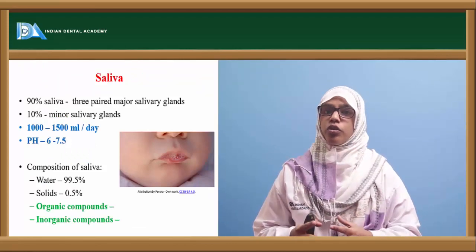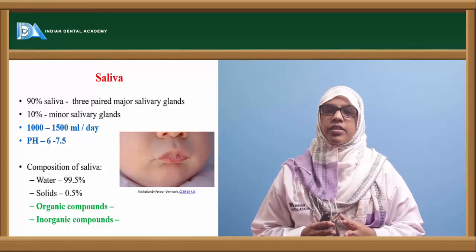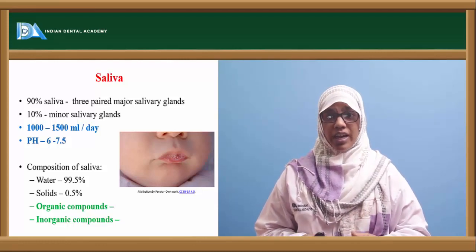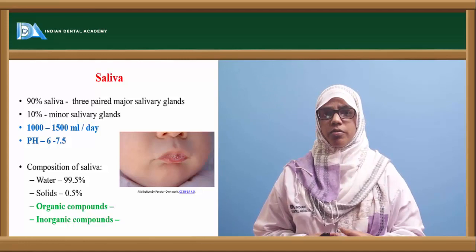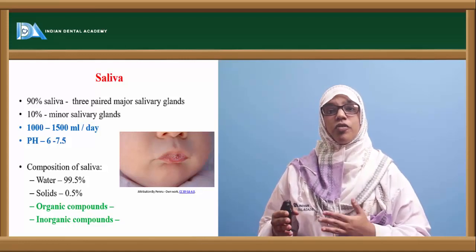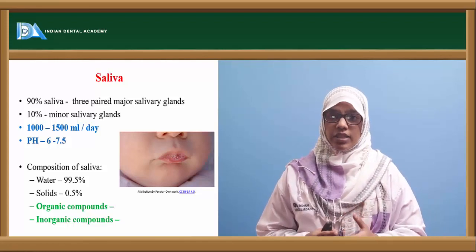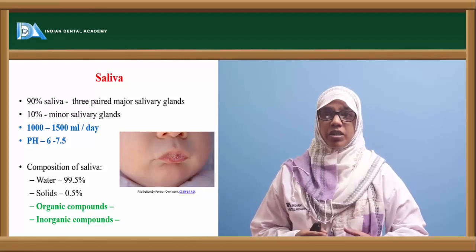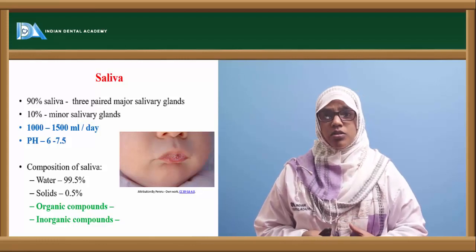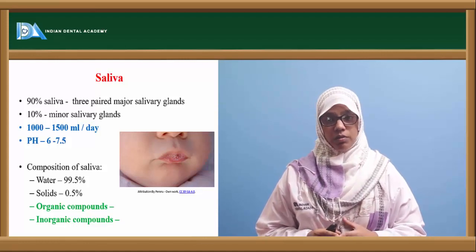Before we discuss these diseases in detail, we should talk about saliva. Saliva lacks the drama of tears and the importance of blood, but it is a very important part of the oral cavity — its importance is equal to that of blood in the body. 90% of saliva is secreted by the three paired major salivary glands and 10% by the minor salivary glands.